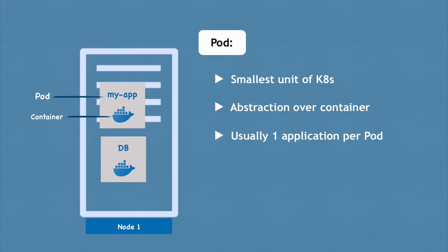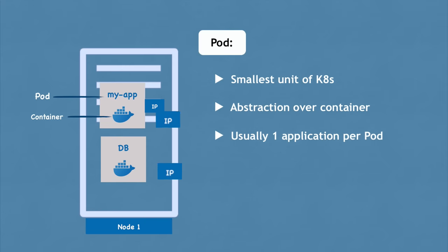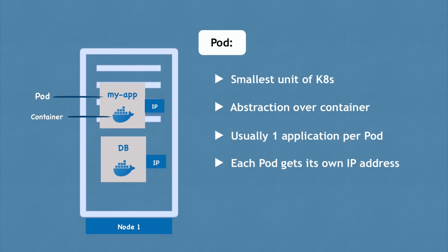Kubernetes offers out of the box a virtual network, which means each pod gets its own IP address — not the container, but the pod gets the IP address. Each pod can communicate with each other using that internal IP address. So my application container can communicate with the database using the IP address.